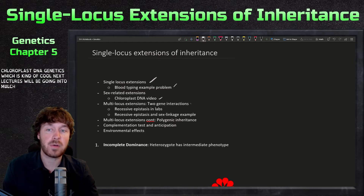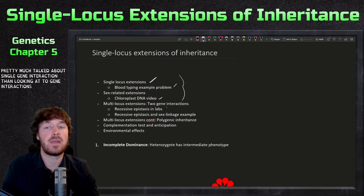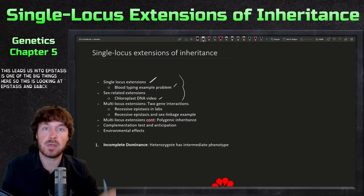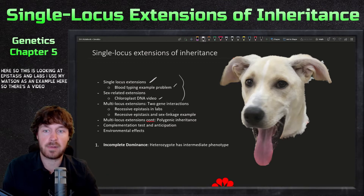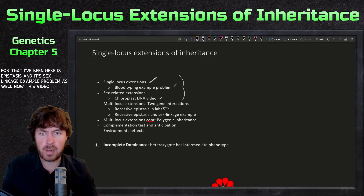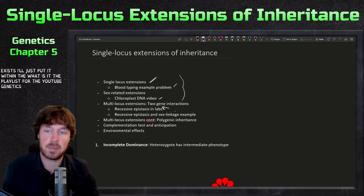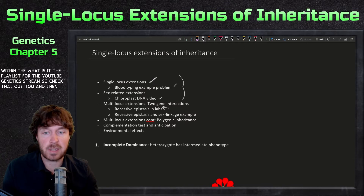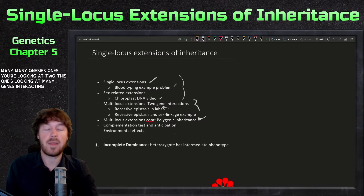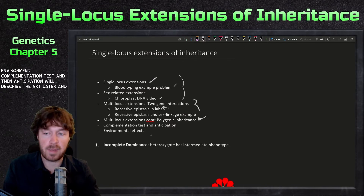Next, lectures will go into multi-locus extensions. The earlier ones are about single gene interactions, then we move to two-gene interactions, leading into epistasis — one of the big topics. There's a video using my dog Watson as an example for epistasis, and an epistasis and sex linkage example problem. Multi-locus extensions then continue into polygenic inheritance — many genes interacting. To finish the chapter, we'll look at the complementation test, anticipation, and environmental effects on genetics and phenotype.